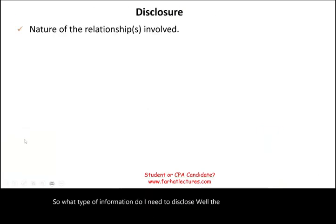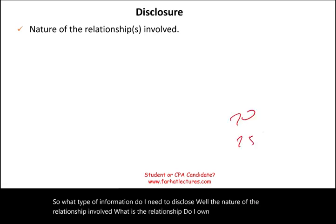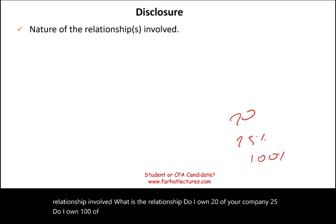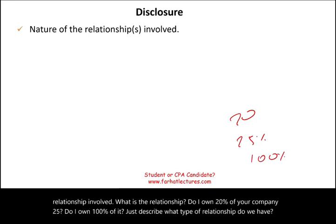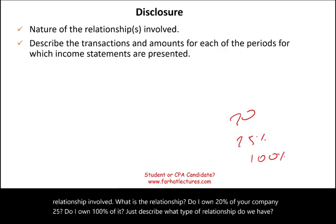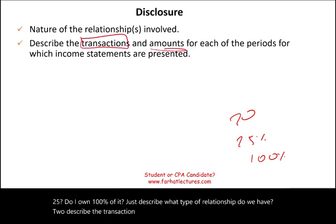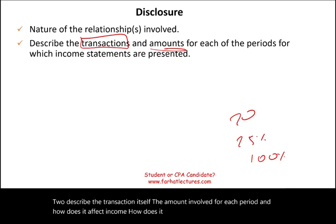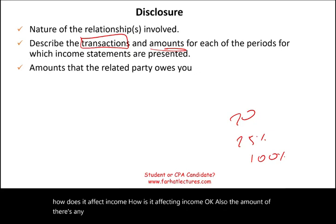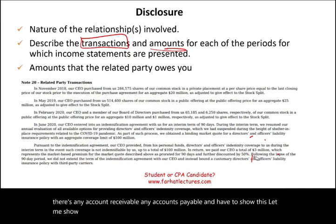So what type of information do you need to disclose? First, the nature of the relationship involved — for example, do you own 20%, 25%, or 100% of the other company? Describe what type of relationship exists. Second, describe the transaction itself — the amount involved for each period and how it affects income. Third, disclose any accounts receivable or accounts payable arising from the transaction. Let's look at an example from Tesla.